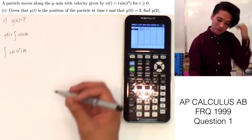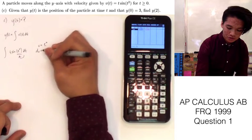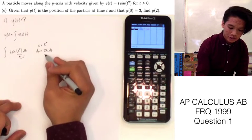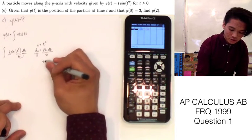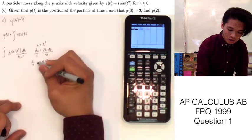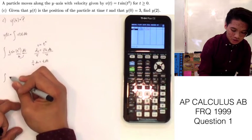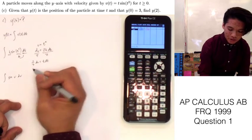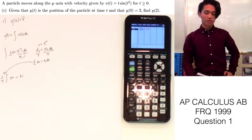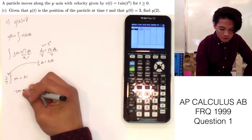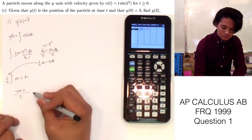The derivative of u equals t squared is 2t dt. What's left in the integrand is only t dt, so we divide both sides by 2, leaving t dt equals one-half du. Substituting, we get the integral of sine of u du with a coefficient of one-half out front. The antiderivative of sine is negative cosine u, so we have negative one-half cosine u, and we still have this coefficient — don't forget the plus C.